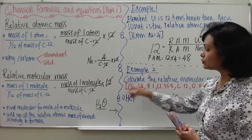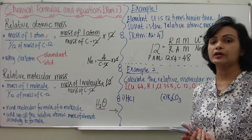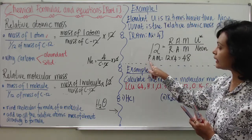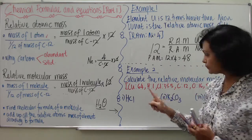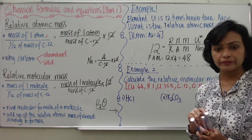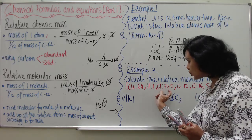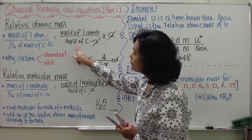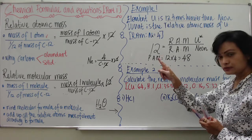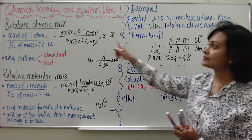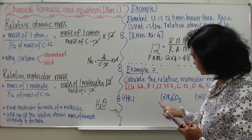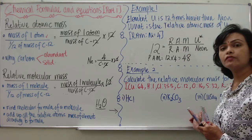Now let's go to Example 2 on how to find the relative molecular mass. The given relative atomic masses are: Copper = 64, Hydrogen = 1, Chlorine = 35.5, Oxygen = 16. For example, the mass of chlorine relative to Carbon-12 is 35.5, and the mass of oxygen relative to Carbon-12 is 16.